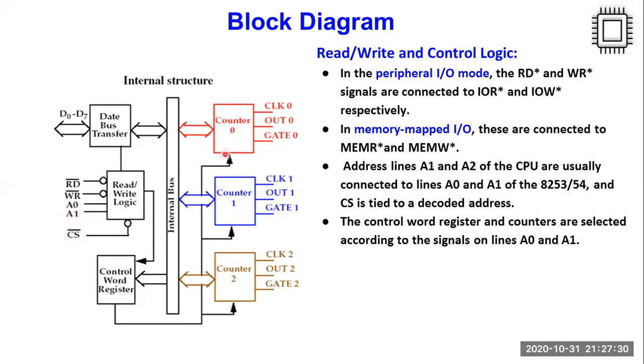Unless and until the chip select signal is enabled, the IC is not logically connected on the system. The chip select signal is an active low signal, which means if I want to logically connect the IC on my system, this has to be zero. Very important feature to see in read-write logic is what is the difference between peripheral I/O mode and memory-mapped I/O mode which is used in the system.